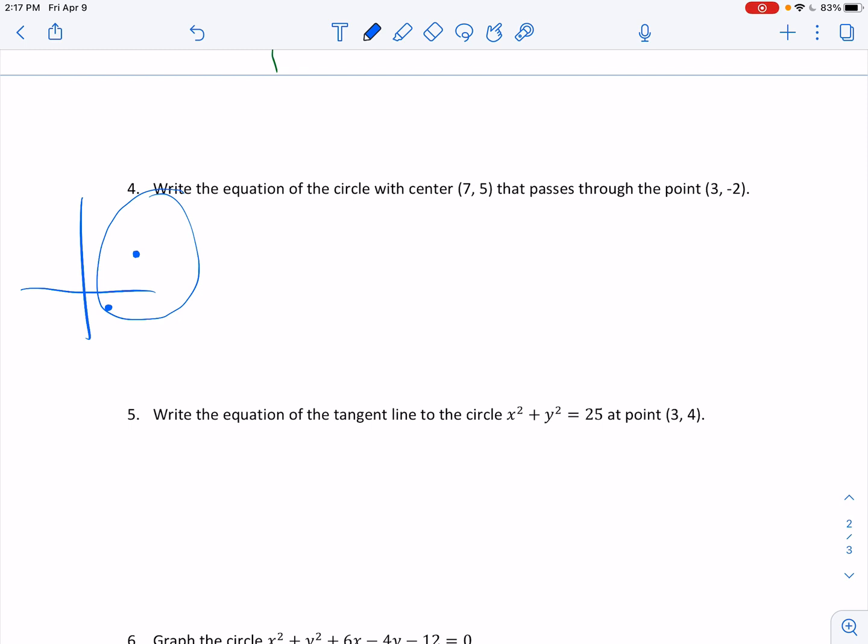One choice is to say, well, I know that it's going to be x minus 7 squared plus y minus 5 squared is going to equal r squared. So your two options are either to plug in, option one. Option one is to plug in this point and say, okay, this becomes 3 minus 7 squared plus negative 2 minus 5 squared is equal to r squared.